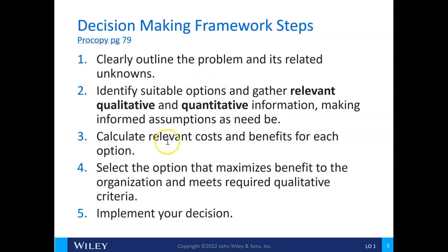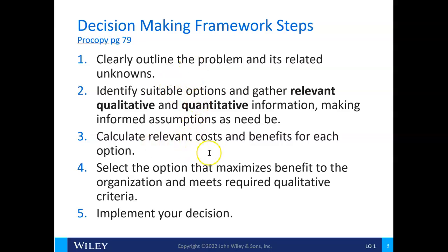Calculate relevant costs and benefits for each option, select the one that maximizes the benefit and minimizes the cost while meeting the qualitative criteria, and then implement it. So basically: outline the problem, gather information, calculate costs and benefits, select an option, and implement.